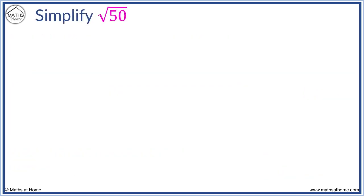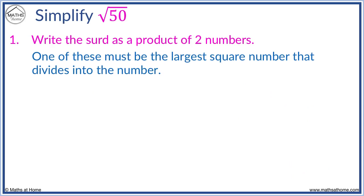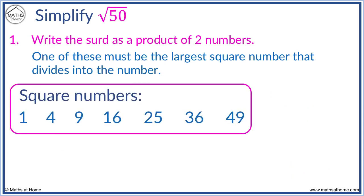Simplify root 50. Here are the square numbers. We look for the largest number which divides into 50. This is 25. 25 times 2 equals 50.